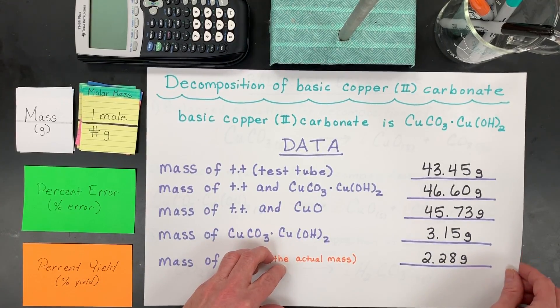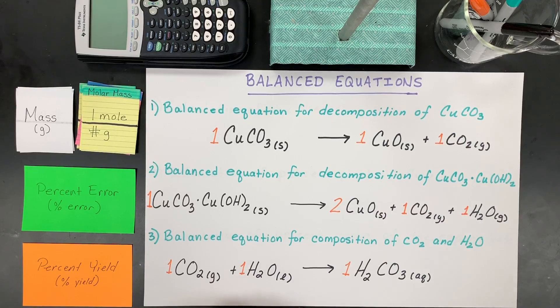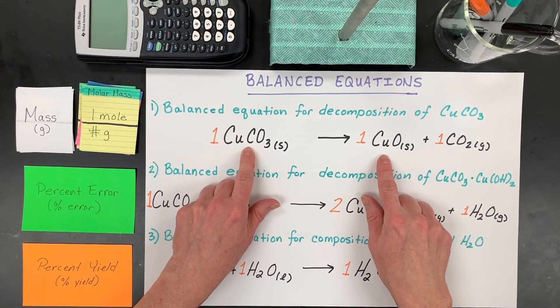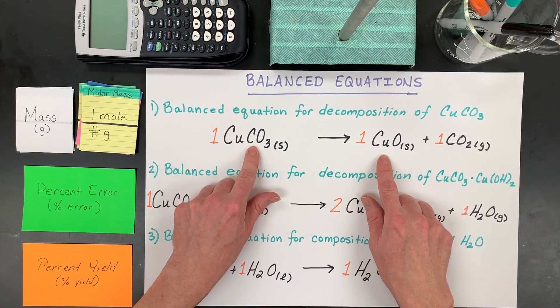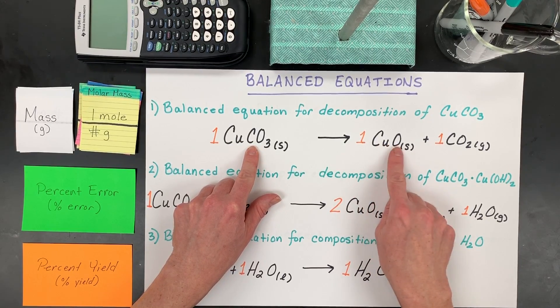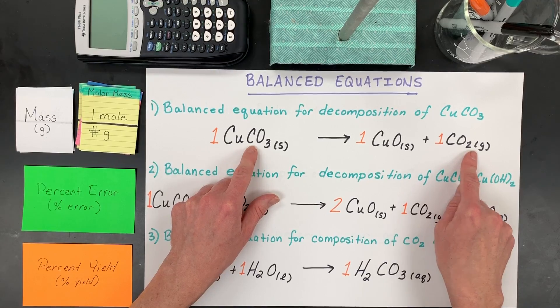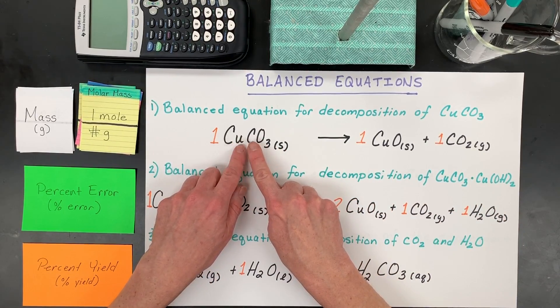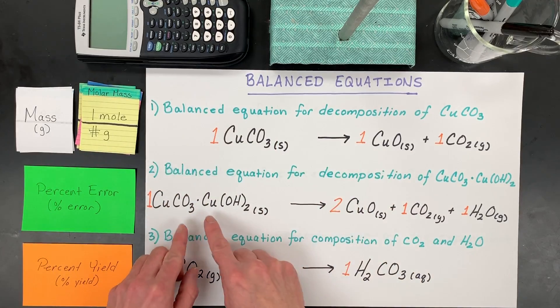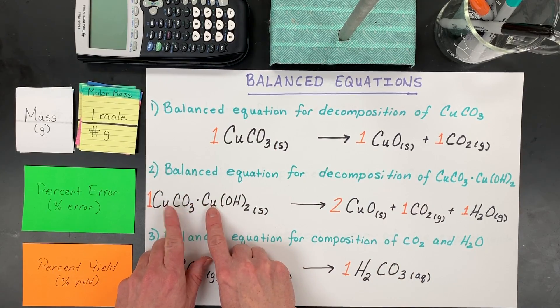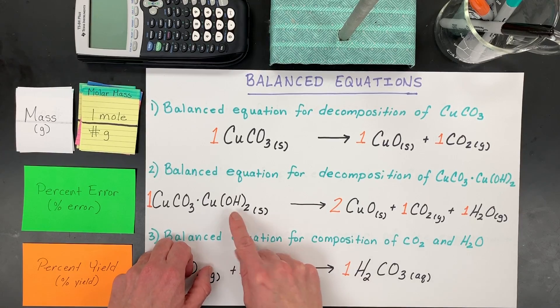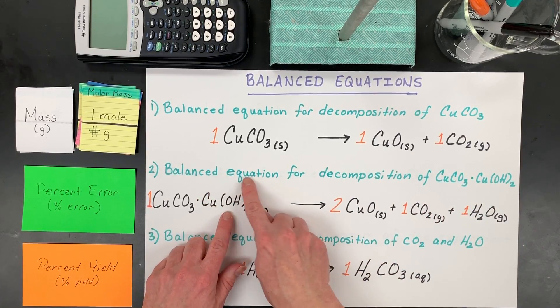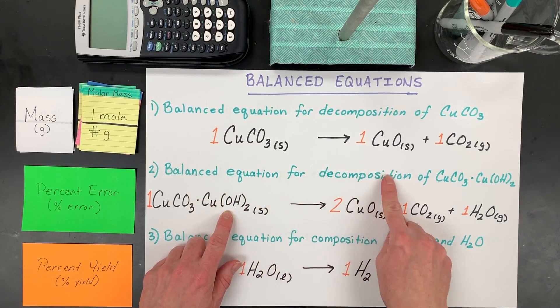The first thing we're going to need is those balanced equations. Most textbooks will tell you that the decomposition of copper carbonate or copper 2 carbonate will produce copper 2 oxide and carbon dioxide, which is true, but the problem is you can't have or purchase this chemical pure. When you purchase it, it's actually a mixture of copper 2 carbonate and copper 2 hydroxide. It makes it complicated. However, it starts off with this greenish blue color, just like I wrote here.